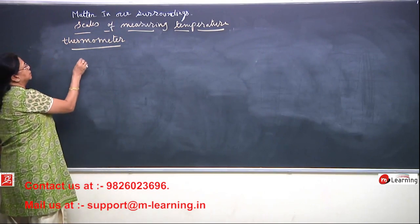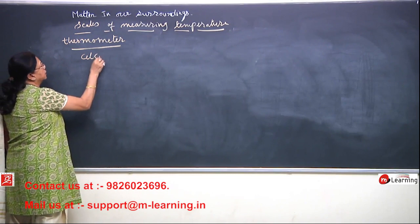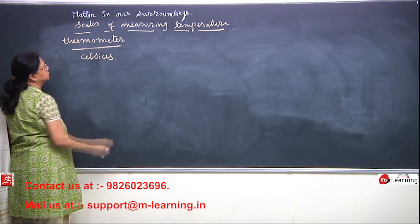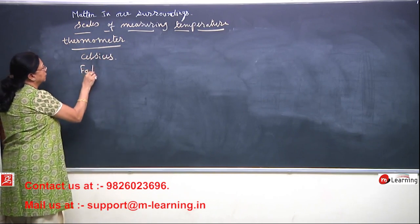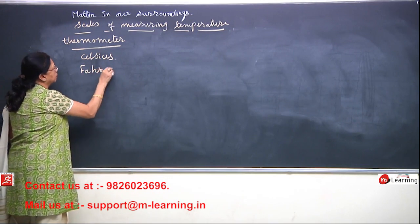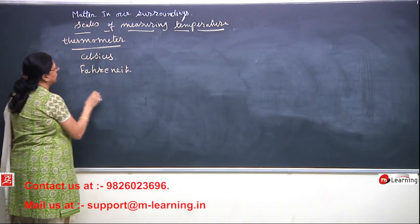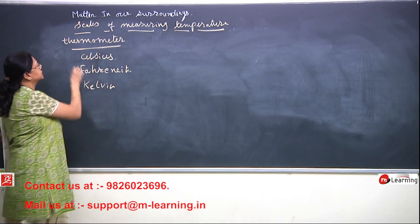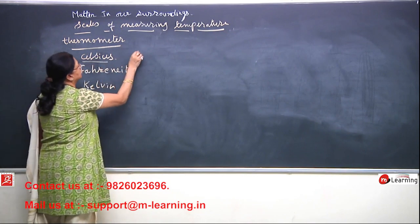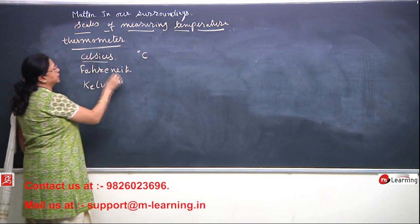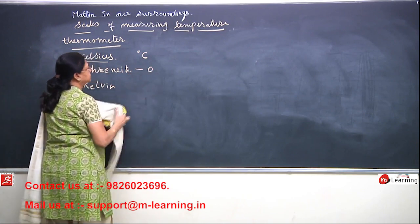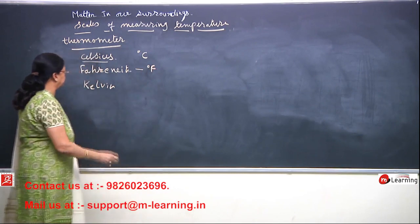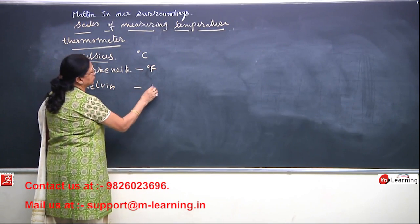There are 3 scales. One is Celsius, another is Fahrenheit, and the third one is Kelvin. Celsius is denoted by degree centigrade, Fahrenheit is denoted by degree F, and Kelvin is denoted by K.